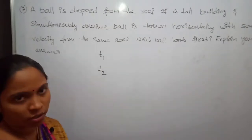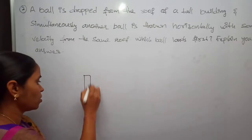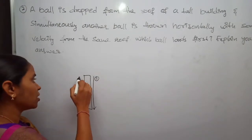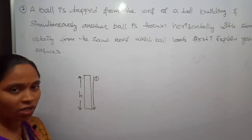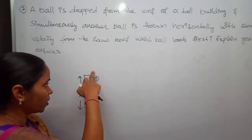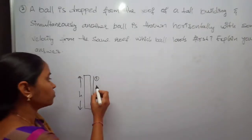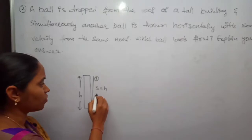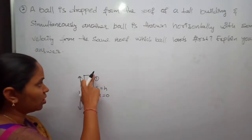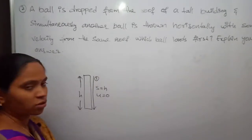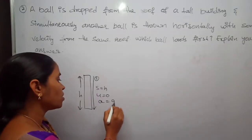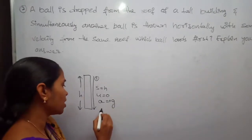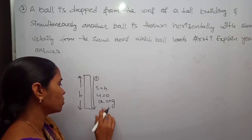Here we have two balls. The first ball is dropped from a tall building. I am considering the height of the building as H. The first ball is dropped from the roof, so the distance traveled by ball one is equal to H. The initial velocity of this ball is equal to zero — initially the ball is at rest. The acceleration is equal to g, the acceleration due to gravity, in the downward direction, so we have a plus sign. The time taken by ball one is t1.